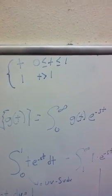So the first thing I did is the general formula of the Laplace transform. The Laplace of g of t equals the integral from 0 to infinity of g of t times e to the negative st.